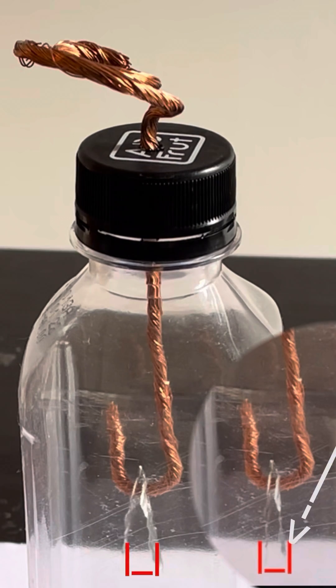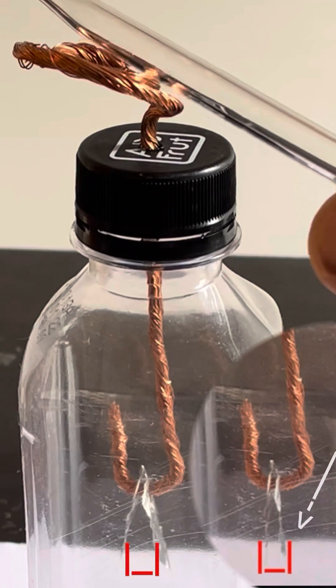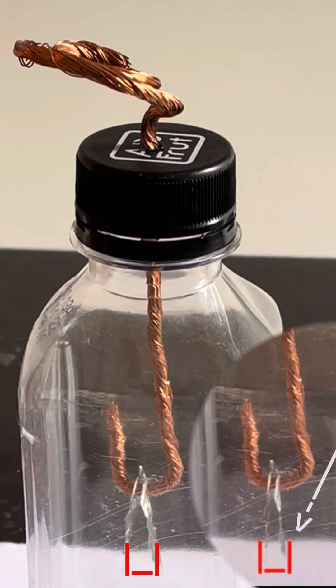So we have sufficiently charged the leaves. Due to similar charges accumulating at the ends of the leaves, they diverge.